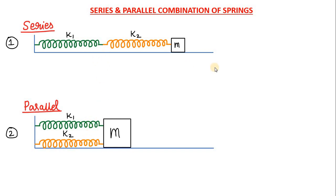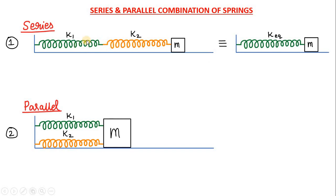Equivalent spring constant means if it is possible to replace both of these springs k1 and k2 by one single spring of spring constant k equivalent, in such a way that the time period of oscillation in this case and in the equivalent case must be same. Then we will say that k equivalent is the equivalent spring constant of k1 and k2.